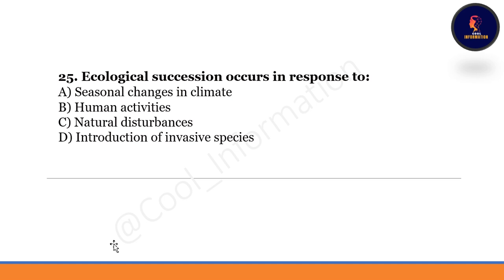Ecological succession occurs in response to: seasonal change in climate, human activities, natural disturbance, or introduction of invasive species. Option C is correct — natural disturbance is the correct option.